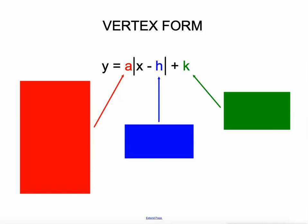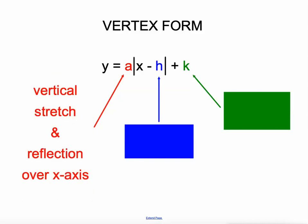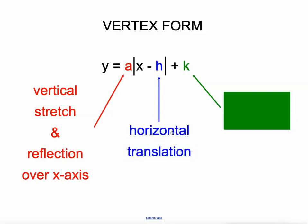This is called vertex form of an absolute value function and each of these values a, h, and k have a special function. The a value represents the vertical stretch, not proportionally, just vertically. It could be a vertical shrink too if a is less than 1, or a reflection over the x-axis if a was negative.